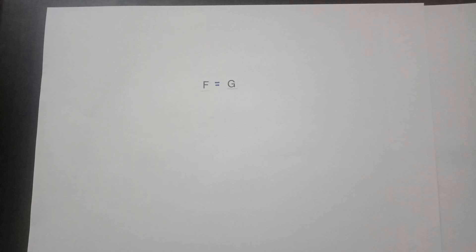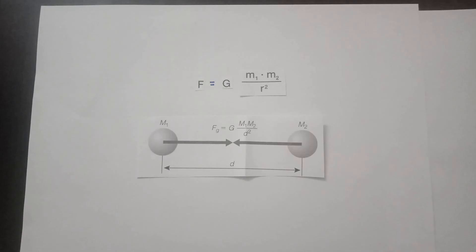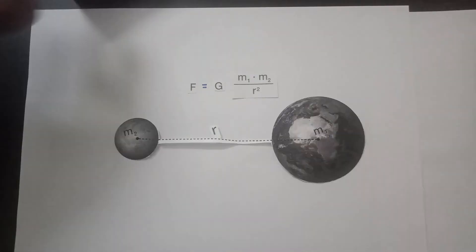He had given the law: F is equal to G into m1 m2 upon r square. It is for two objects.